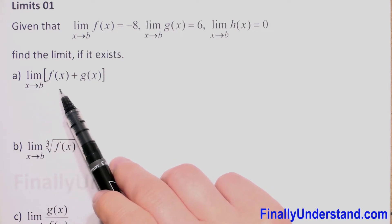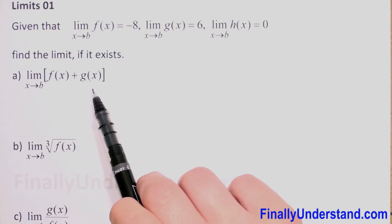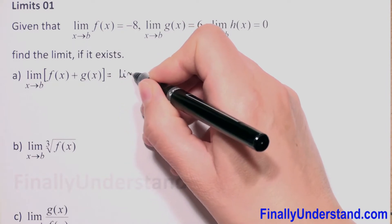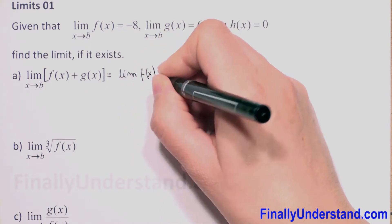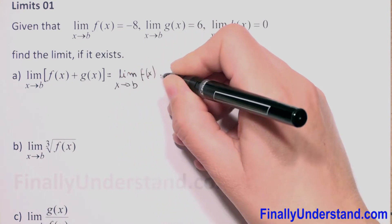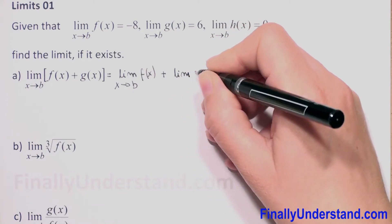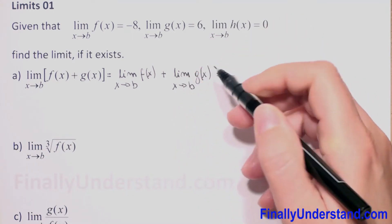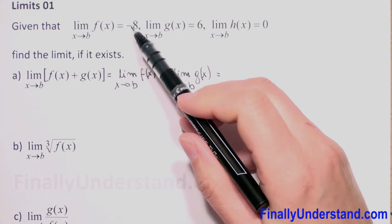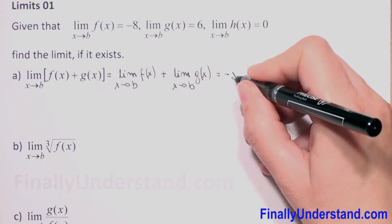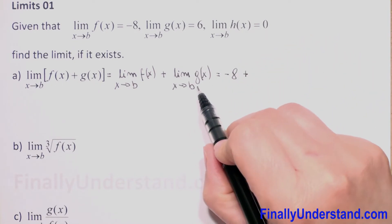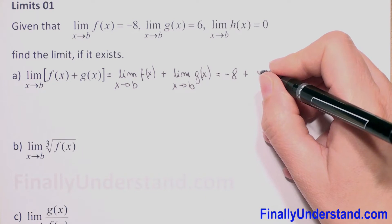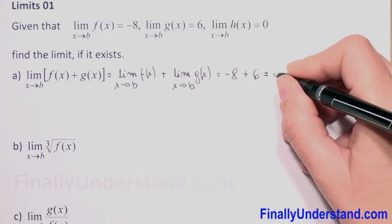We know that the limit of a sum is equal to the sum of limits, so this equals the limit of f(x) as x approaches b plus the limit of g(x) as x approaches b. We know the limit of f(x) is negative 8 and the limit of g(x) is 6, so we have negative 8 plus 6, which equals negative 2. This is our solution.